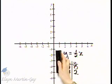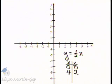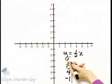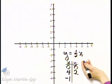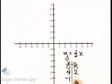Let's find a third ordered pair solution. Suppose we let x be negative one. Let's see if we can do it mentally. y equals one-half times negative one. What is one-half times negative one? It is negative one-half.